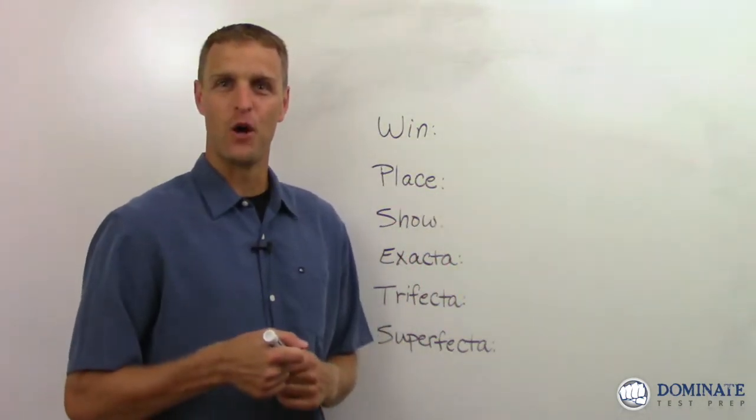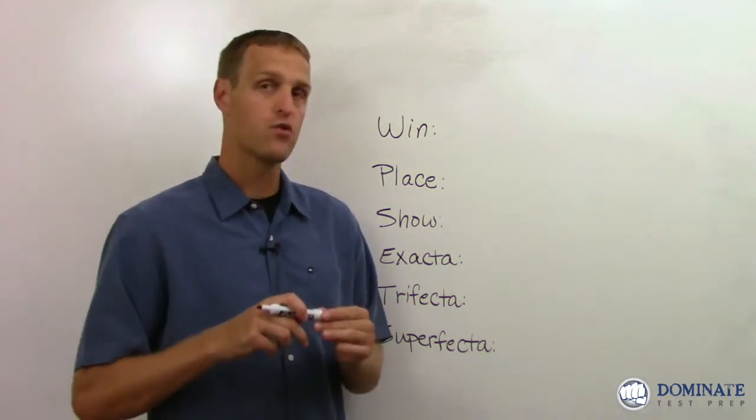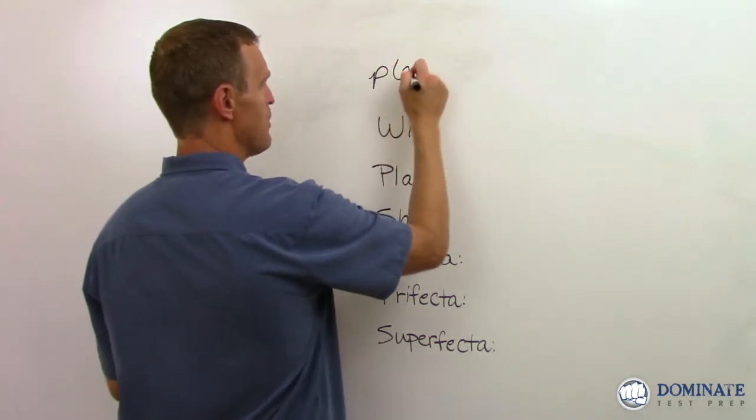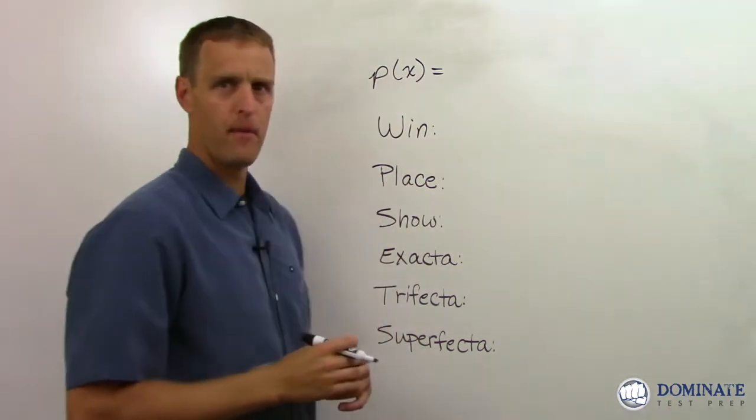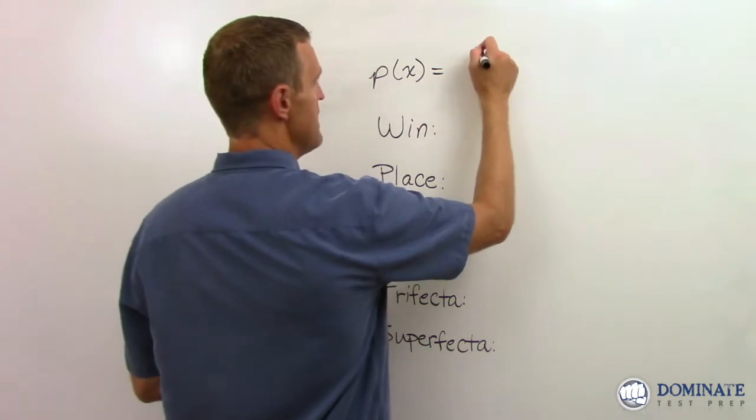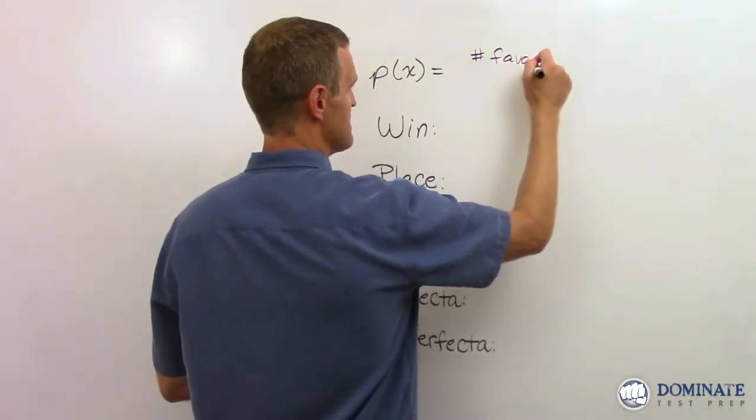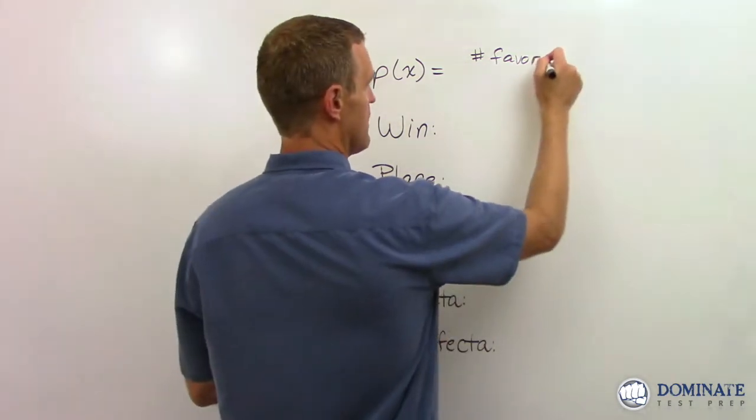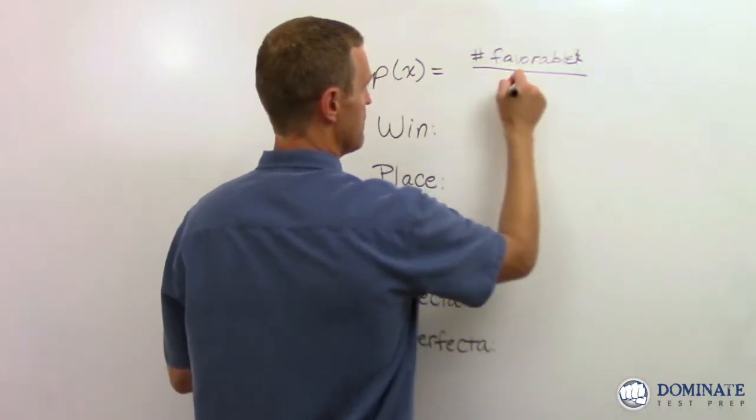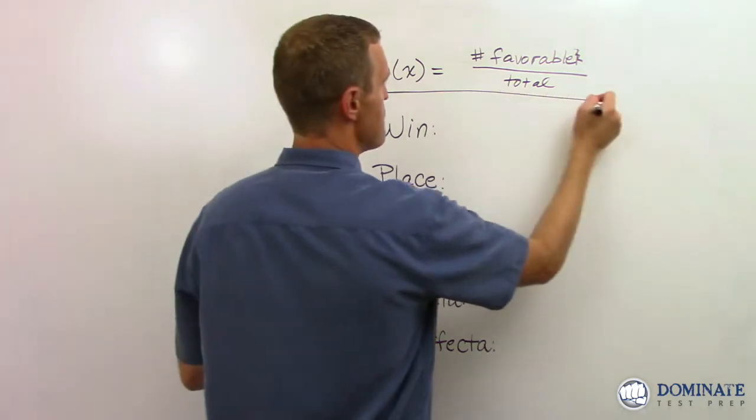So to make this video applicable to you on whatever test you're studying for, let's remind ourselves of what probability even is. The simple definition or rule of probability is that the probability of X, the probability of something happening, is the number of favorable outcomes over the total number of outcomes. That's pretty much the basic rule.